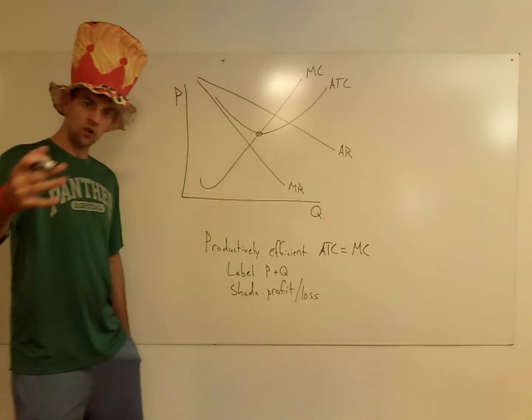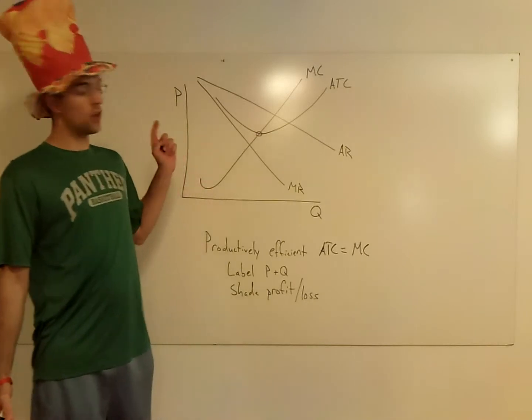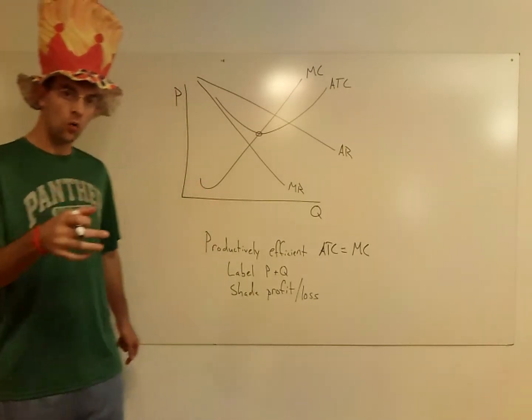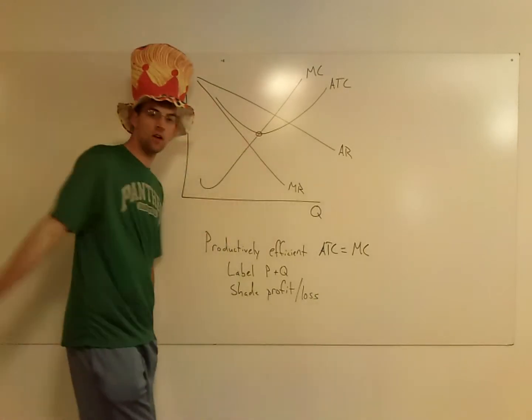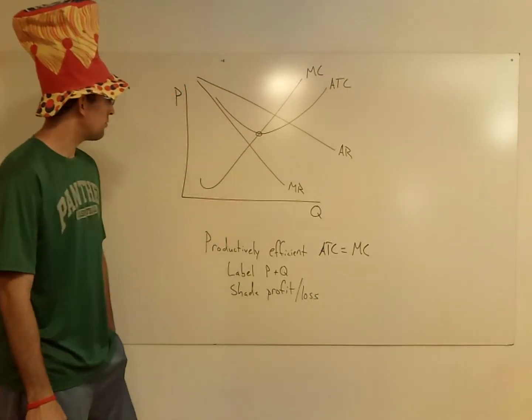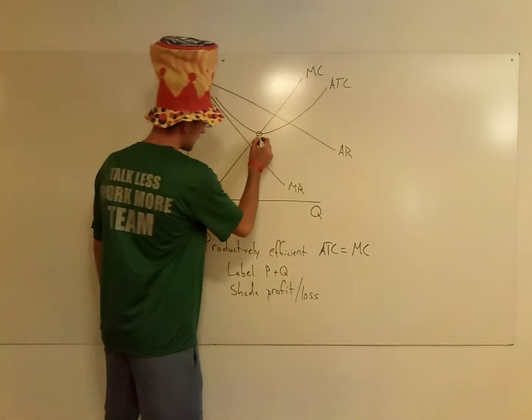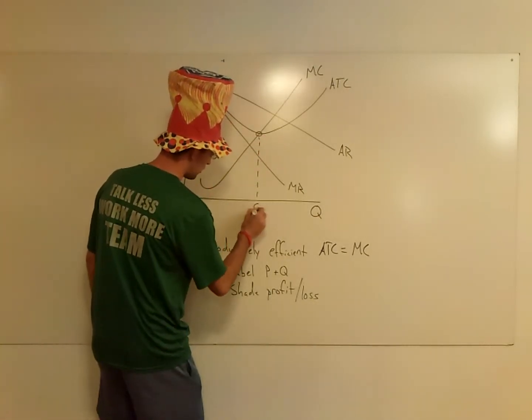And you should always know if you have to draw a graph that when you draw the marginal cost and the ATC, it is important that you always draw it such that the ATC hits at the very minimum of marginal cost. So let's see, that's going to tell us our quantity. I go Q.